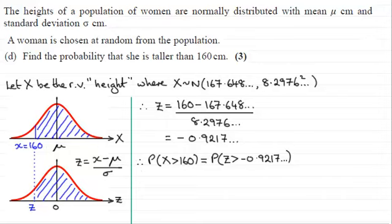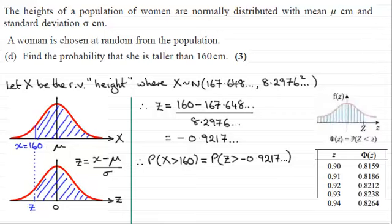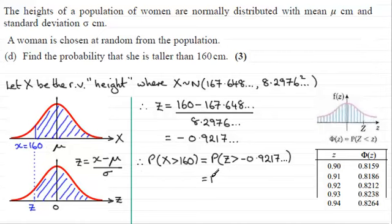We need to use tables or our calculator. Taking you through tables first: you'll be looking up in the cumulative distribution tables for a normal distribution, often written as Φ(Z), which gives the probability of being less than a Z value. Notice this Z value is to the right of zero, so we have to use symmetry. We have Z = −0.9217; if we mirror it, this area is exactly the same as the area to the left of the positive value 0.9217 — that is, the probability of Z being less than +0.9217.